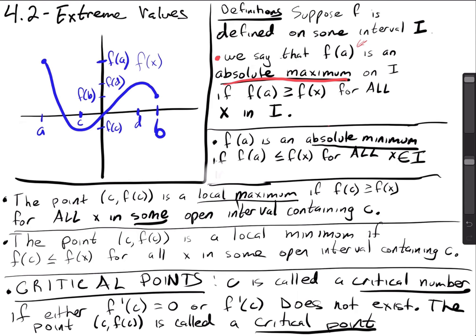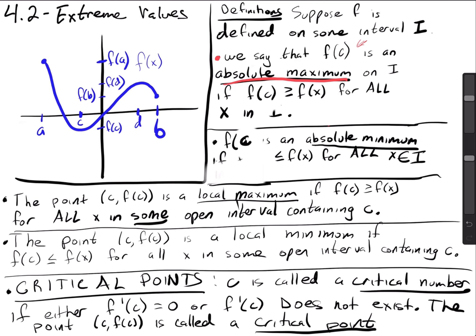Let me change this to c just so we don't confuse it. I'm going to change them all to c's. So f of c is an absolute maximum on I if f of c is greater than or equal to f of x for all x in I.